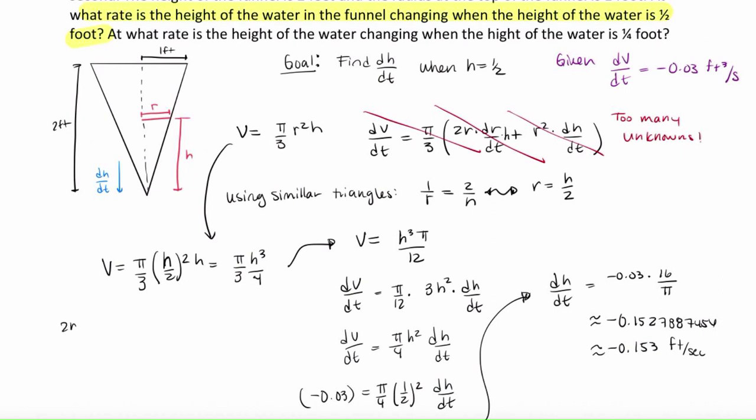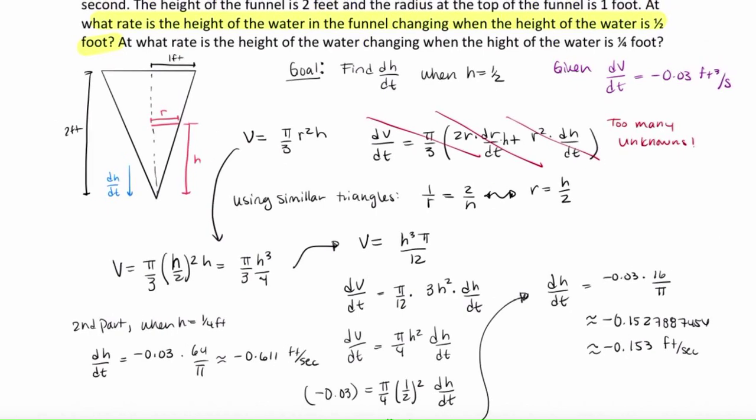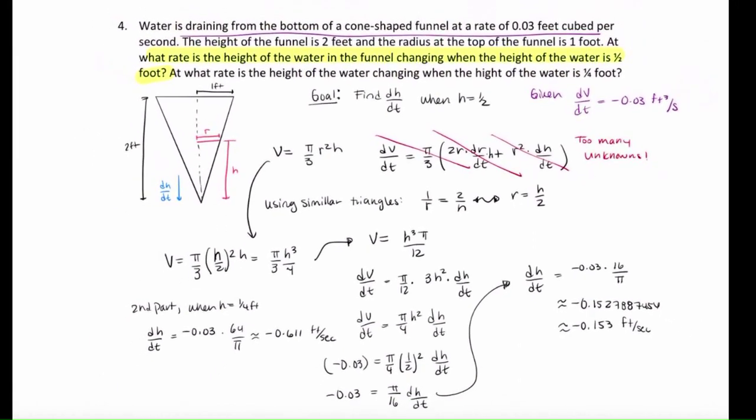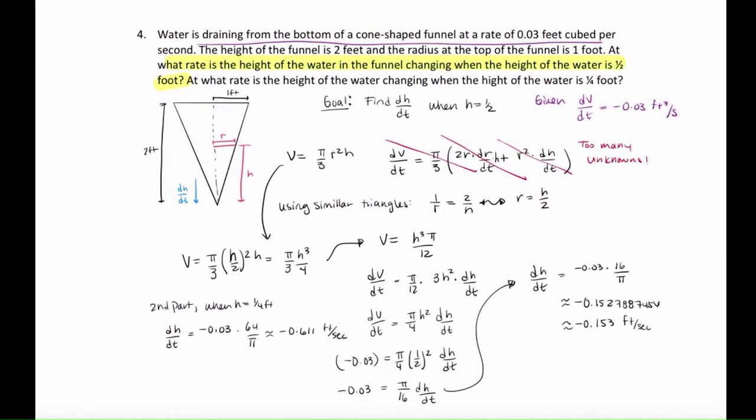So for the second part, when h equals a quarter foot, we end up with dh over dt is equal to negative .03 times, and instead of 16 now, we have 4 times 4 squared, so we have 64 over pi, and that is about negative 0.611 feet per second. And I'm going to zoom out so you can see the entire problem. And that concludes the video for example 4.